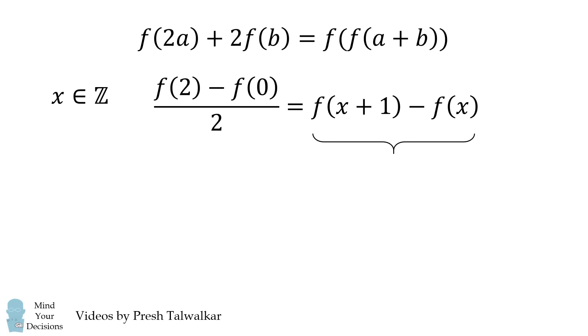Notice the right hand side of the equation will be the difference of consecutive terms. This is F of X plus one minus F of X. The left hand side of the equation will be the value of the function at two minus the value of the function at zero all divided by two. Therefore, this will be a constant value and it's true for all integers X.